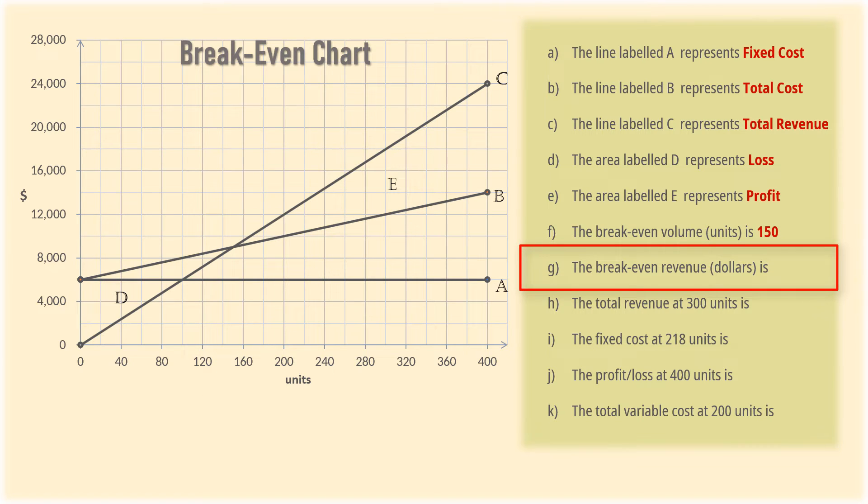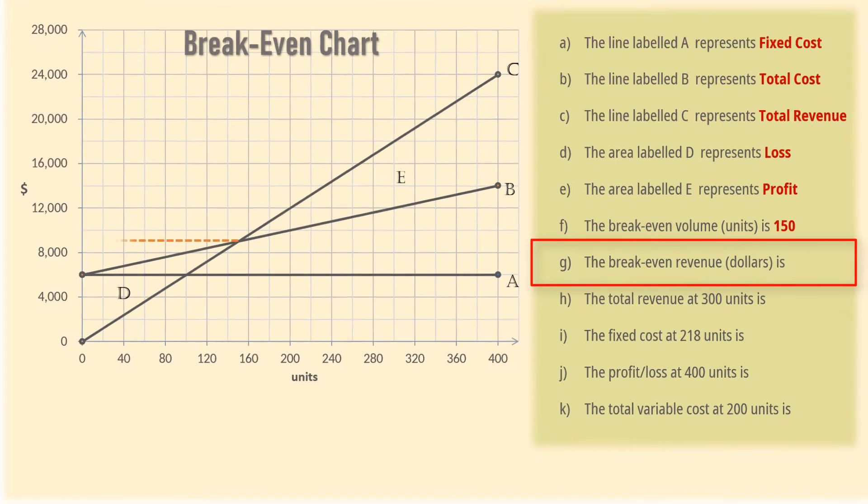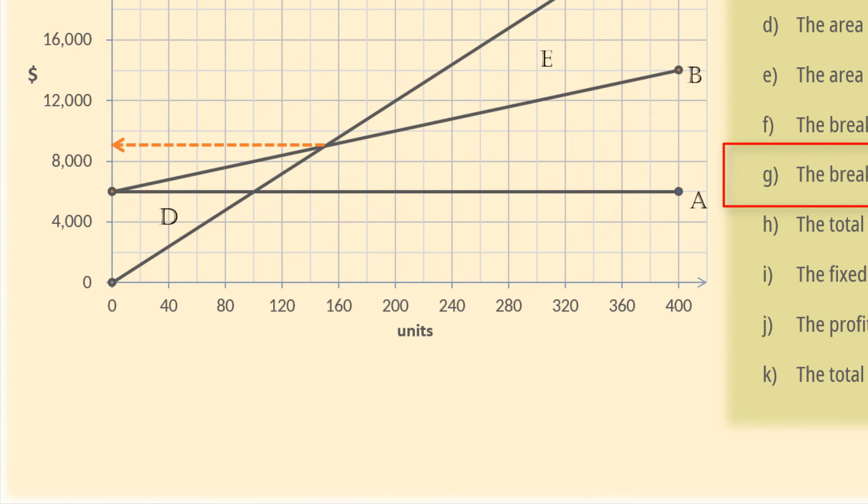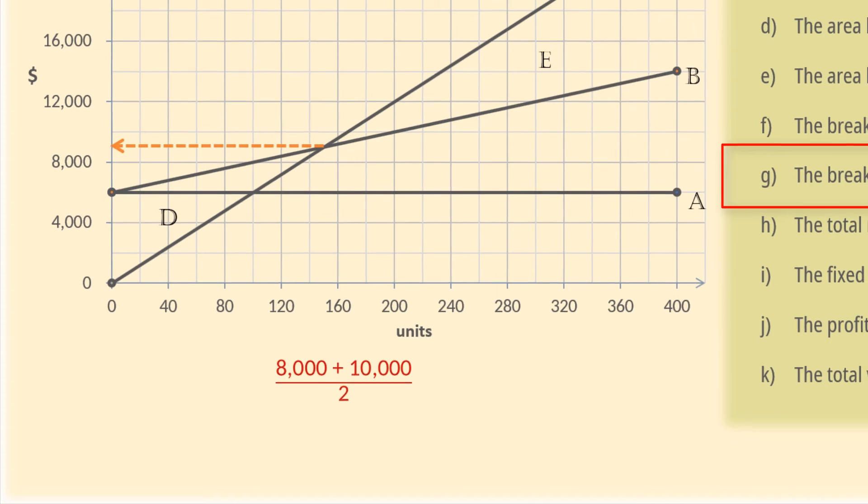For break-even in dollars, we trace the intersection of total revenue and total cost to the dollar axis. Note that each unit on the vertical axis here is $2,000. Therefore, the break-even point is the midpoint of $8,000 and $10,000. Adding them and dividing by 2 gives $9,000.